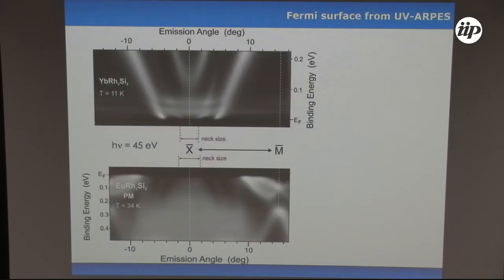This already suggests that the proposition — that in europium rhodium disilicide the Fermi surface should be large — is fully correct. I would like to demonstrate a comparison of the neck widths for terbium rhodium and europium rhodium: as you can see, they are nearly identical.